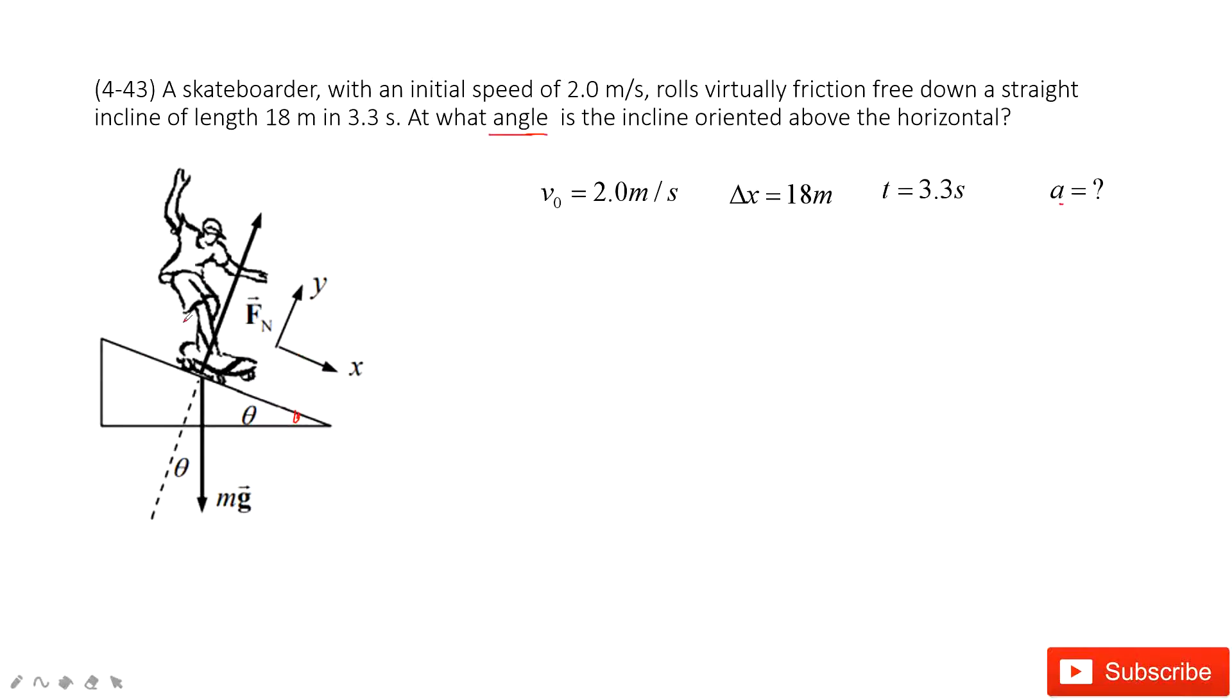We look at this system. Along the slope is x-direction, x-component. And vertical to this slope is the y-component. So we project the gravity in y-component, mg cos θ, in x-component, mg sin θ.